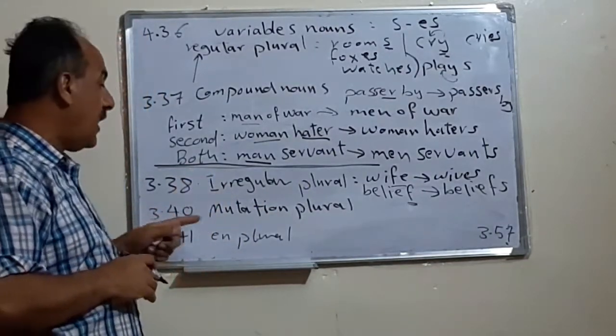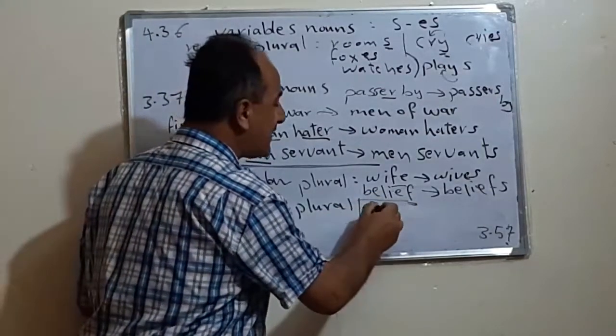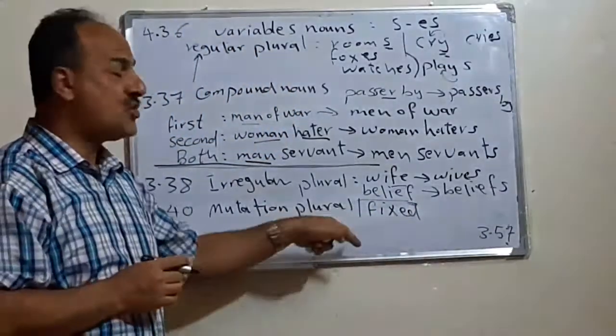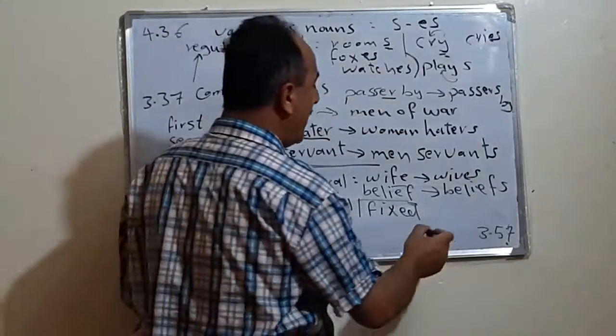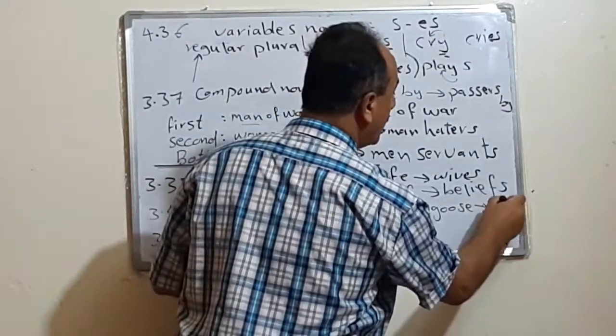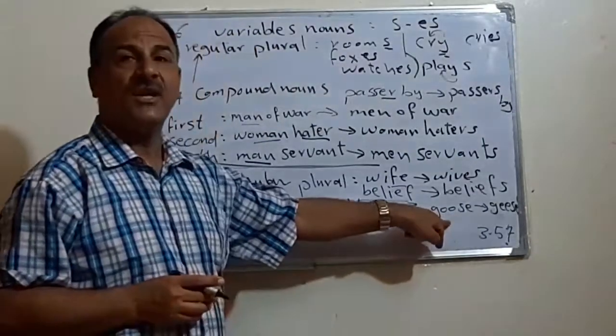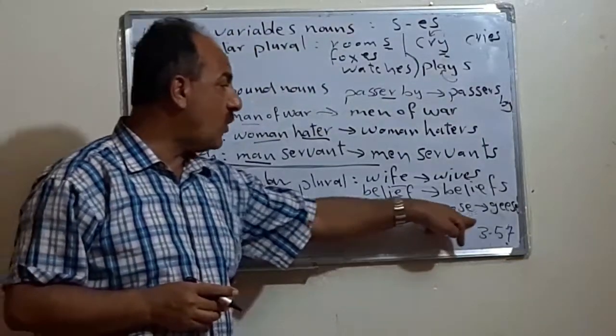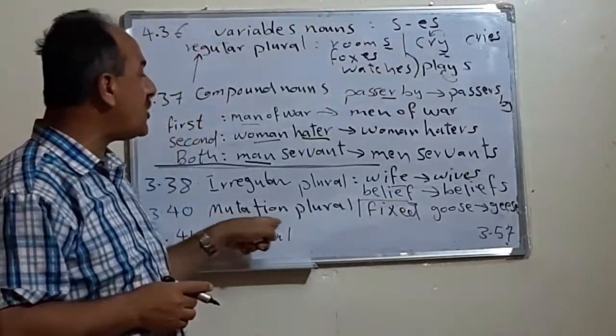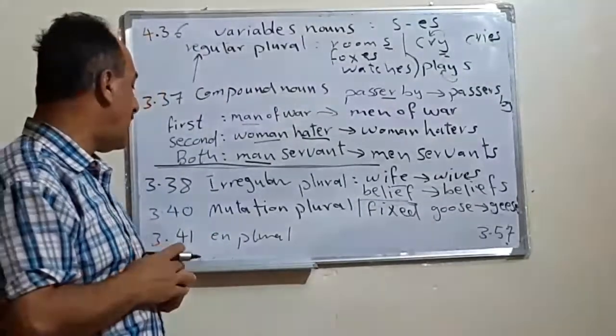The second type of irregular, in 3.40, we call that a mutation plural. Here we have fixed, limited items that we change the word. For example, if we have the word goose, we change into geese. Goose, geese, foot, feet, tooth, teeth. Man, men, woman, women. These words we call mutation plural. Plural means we have limited words we change them from the singular into plural.